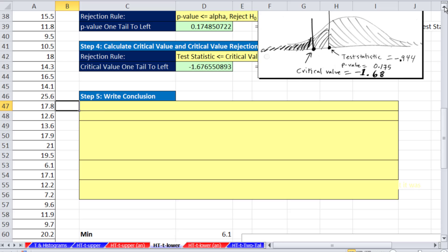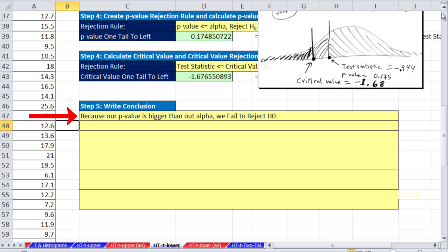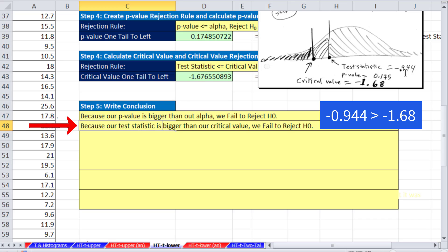Ever important, write our conclusion. Because our p-value is bigger than our alpha, we fail to reject. Because our test statistic is bigger, minus 0.94 is bigger than minus 1.68. So because our test statistic is bigger than our critical value, we fail to reject.